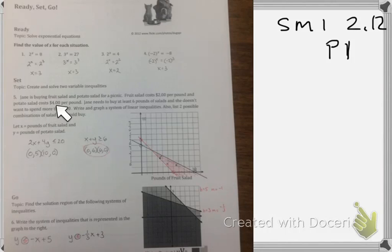So we're talking about cost - $4 a pound, $2 a pound. They tell us here x is our fruit salad, y is our potato salad. So fruit salad was $2 a pound, potato salad $4 a pound. Okay, x is the number of pounds of fruit salad, y number of pounds of potato salad. And it has to be less than $20.